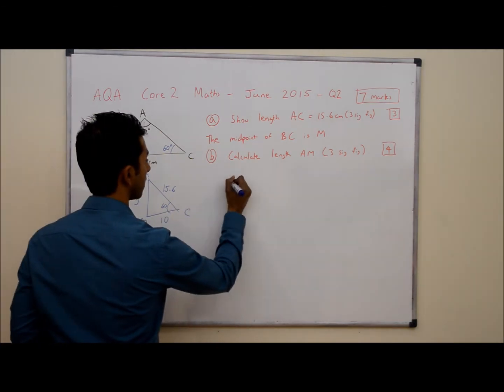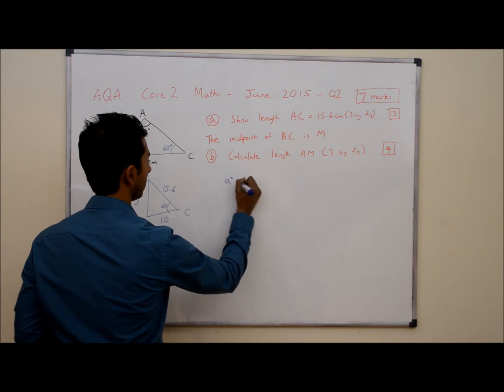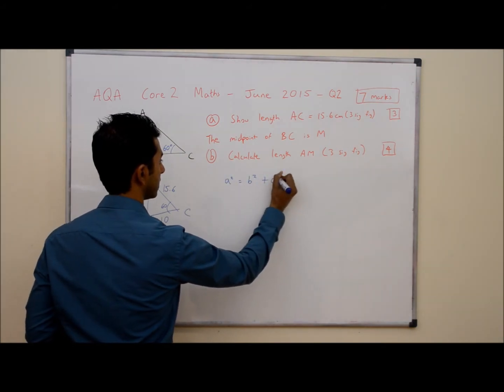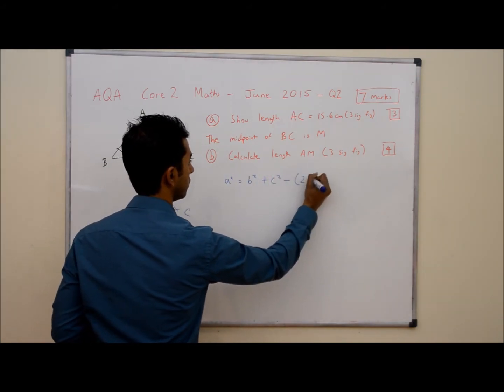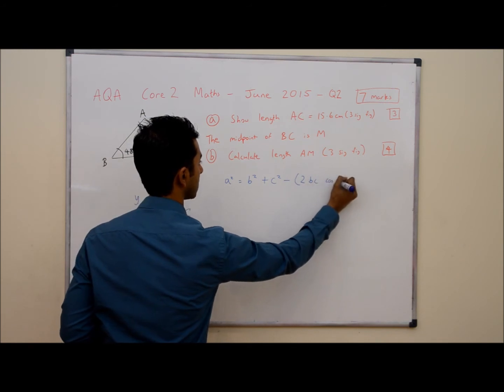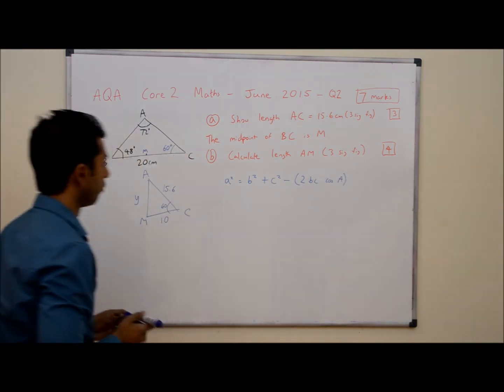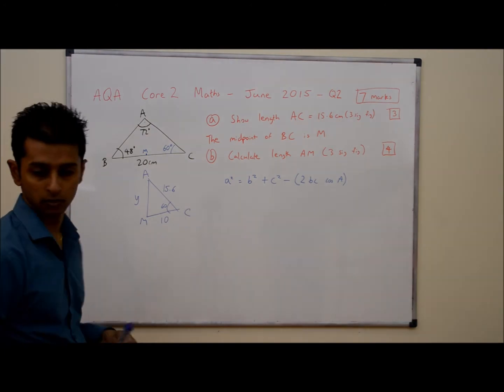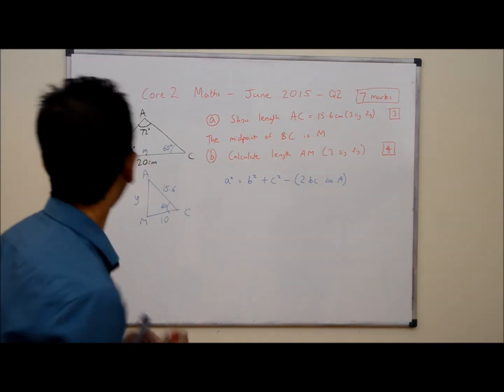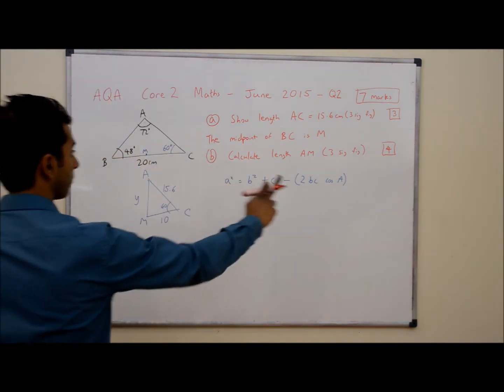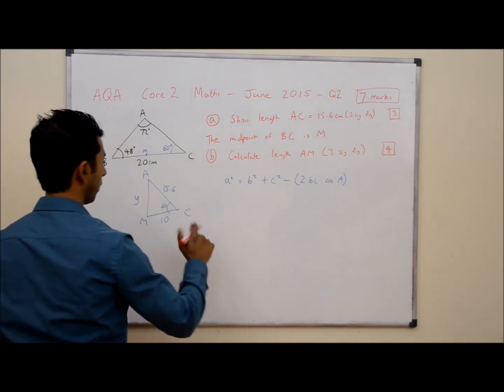Now we're going to be using the cosine rule here to find the length of Y. So the cosine rule is A squared equals B squared plus C squared minus 2BC cos A. So I'm just going to relabel each of these letters. So let me get a different colored pen.